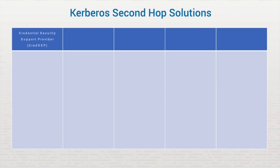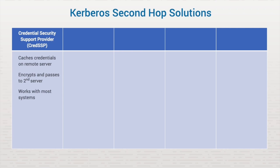The first method is to enable Credential Security Support Provider, or CredSSP, for authentication. CredSSP works by caching the authentication credentials on the remote server and then passing them to the second server. A main benefit is that it works with almost any system from Windows Server 2008 and later. However, if the remote server is compromised, your administrator credentials can be easily stolen. CredSSP is disabled by default and must be enabled on both client and server computers. It is also unconstrained, meaning credential passing works with any service, not just PowerShell remoting.